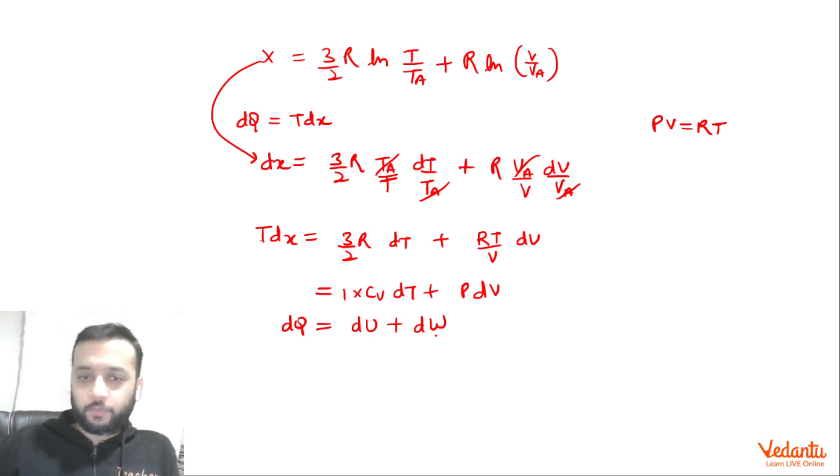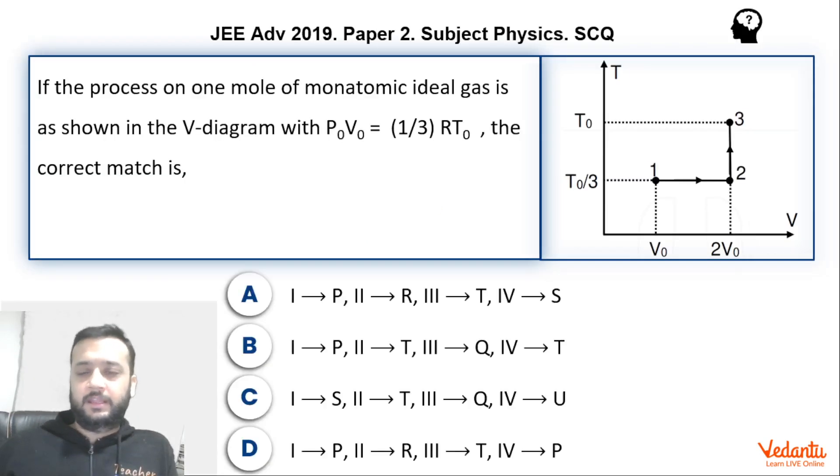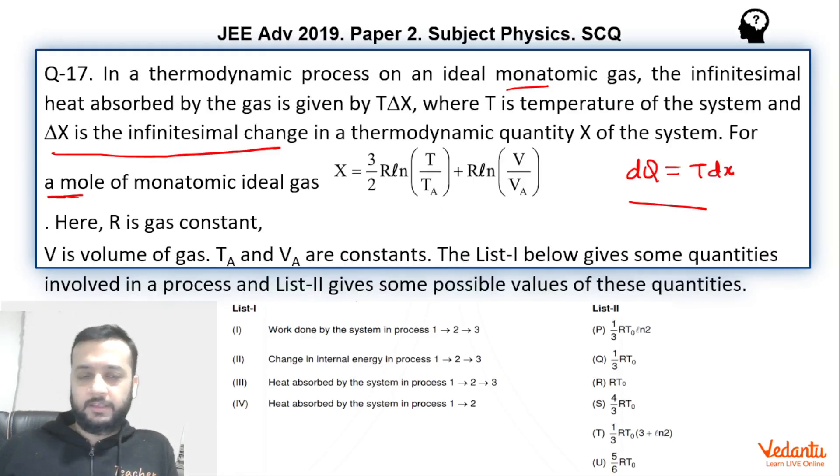Although I was not required to prove this in this question, but for just for the better clarity, I thought of doing this. Now let's get back to the question. So basically, there is a list. Work done. We have to find the work done by the system in the process 1, 2, 3. We will look at what are the processes 1, 2, 3 in the graph.